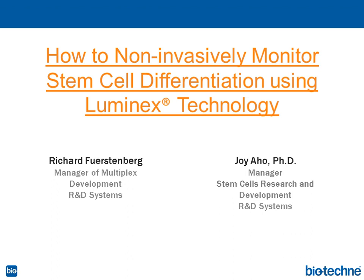The ability of pluripotent stem cells to differentiate into any tissue of the body has the potential to revolutionize medicine. As stem cell research moves closer toward therapeutic application, there is a recognized need to increase the quality and consistency of pluripotent stem cells and their derivatives. Controlling the variability and efficiency of differentiation across cell lines, as well as independent differentiation events within a single cell line, is a critical issue for quality control. Such variability can undermine data interpretation and slow research progress. Currently, it is difficult to monitor variability during differentiation without sacrificing cell yield.